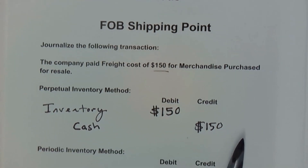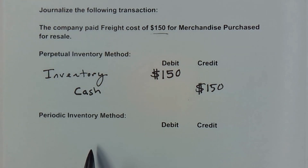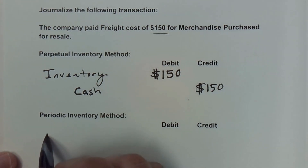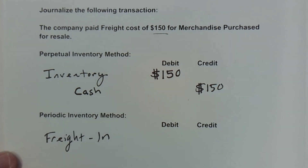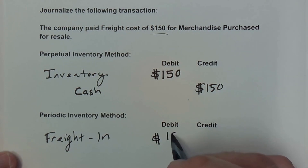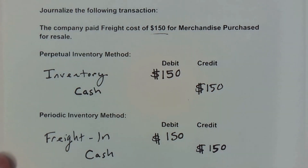Now let's look at the periodic inventory method using the same $150 of freight costs. In this case, we're going to place the freight costs into a temporary account called Freight In — we debit $150 to Freight In, and just like in the perpetual method, we credit Cash because the cash has gone out to pay the carrier. You have now properly accounted for the freight costs for FOB shipping point in the periodic inventory method.